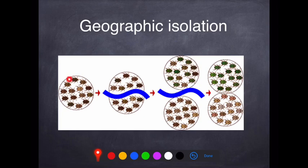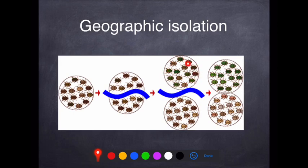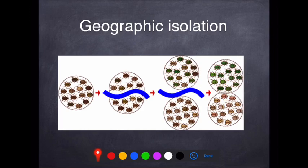So to summarise: variation already exists. The geographic barrier arrives, separating the population into two. Natural selection occurs independently in each. Micro-evolution takes place as a result, such that genotypically and phenotypically you have two completely separate populations. Those micro-evolutionary changes accumulate over many many generations — potentially hundreds of thousands of years — such that eventually, if the barrier were removed, the two populations would be unable to breed with each other. On the basis of our definition of species, these two populations would now actually be two separate species.